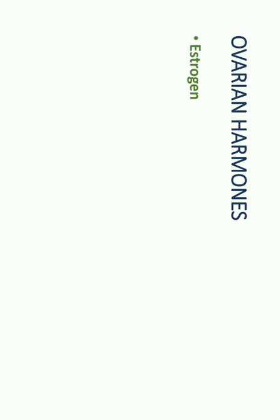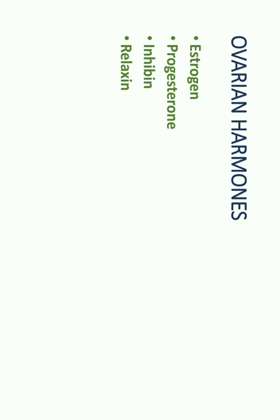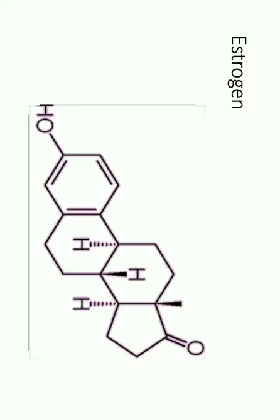What are the ovarian hormones? Not only estrogen and progesterone are secreted from the ovary — there are some other hormones as well. Estrogen is very important; its level is higher during the follicular phase and drops just before ovulation. Progesterone level peaks during the second half of the menstrual cycle after ovulation. Inhibin and relaxin are also ovarian hormones, and small quantities of androgen are also released.